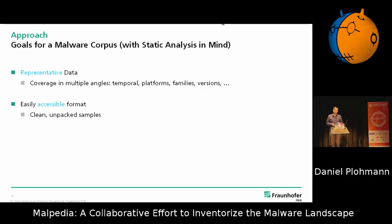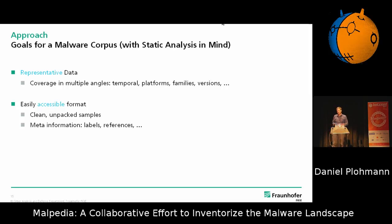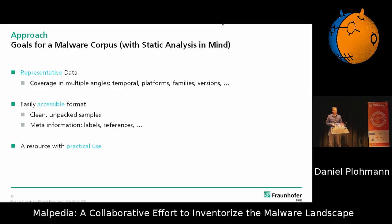To some degree, it also makes sense to clean them up, because if you have process injection you might have some fragments not really related to the family but still present in the memory dump. So you have to do some post-processing to have actually really clean data. And while we're on it, let's not just start with labels but do all of this data thing directly in the same run. Finally, this should not be academically isolated — let's see if we can find some practical use with it as well.